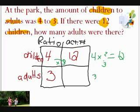Now we're going to do 3 times 3, and we're going to get 9. So we're going to put a 9 in the adults box under actual number.